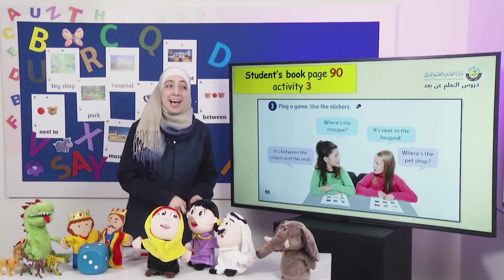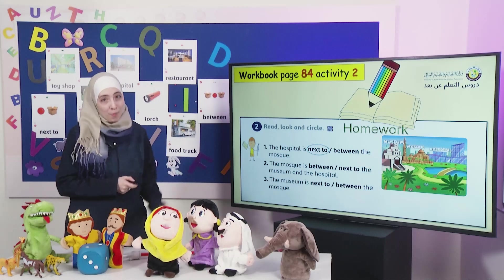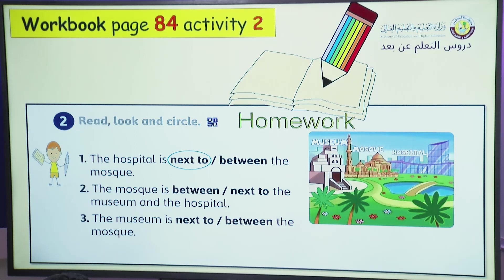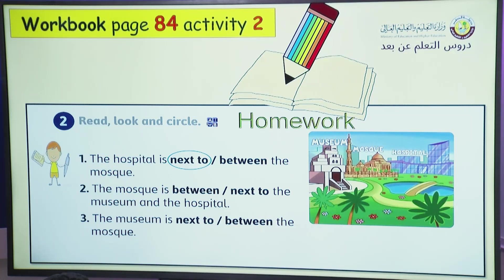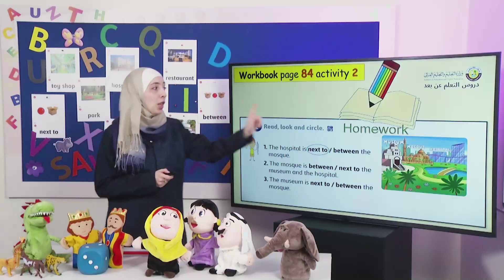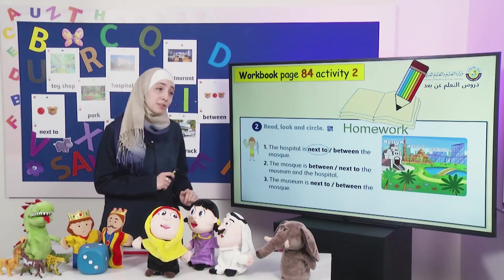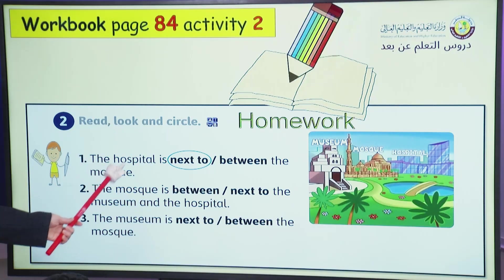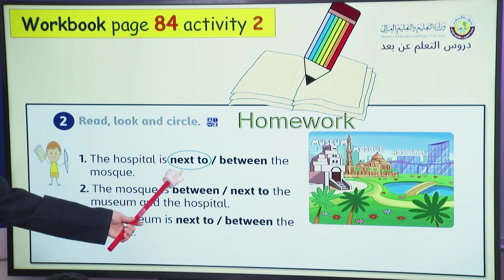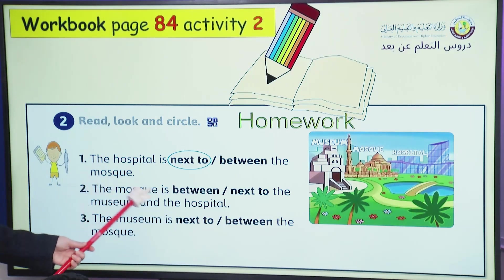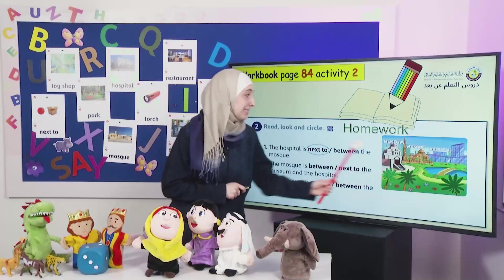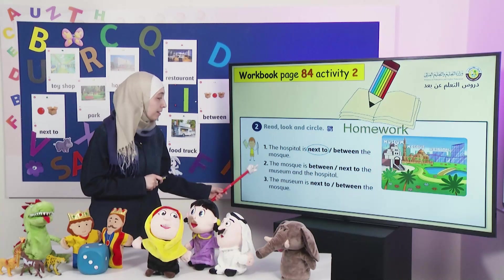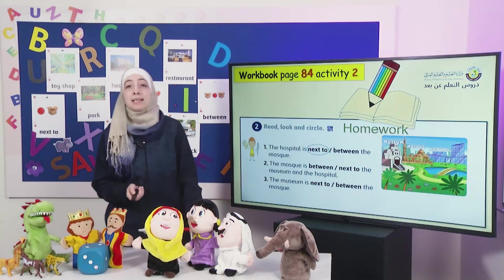Okay, do your best. Now let's move to the homework part. Our homework for today is from workbook page 84, Activity 2. In this activity, you have to read, look at the picture and circle the correct word. I will read the first one for you. Number one: the hospital is next to or between the mosque? Look at the hospital — yes, it's next to the mosque. Do numbers two and three and send to your teacher, dear students.